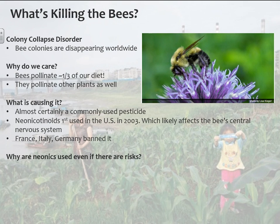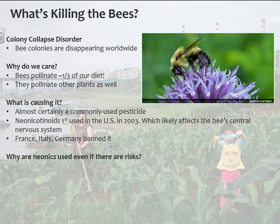They're almost certain this is what's causing it — to the point that France, Italy, and Germany have banned it, and since that article was written, more countries in the European Union have banned it. In the United States, we do not take the precautionary principle. We tend to allow chemicals to be produced and used until we find out they're dangerous — we approve chemicals first, and only if we figure out later they're bad might we ban them.